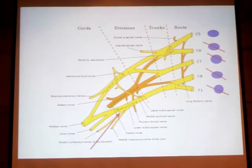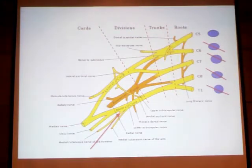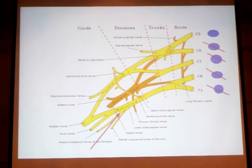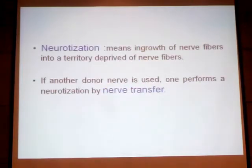This is the hand movement — specifically the main movement of root C5 or C6. This is the main movement that we have to fix. It is the primary functional target that requires restoration.